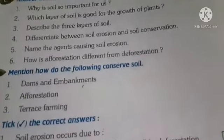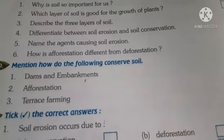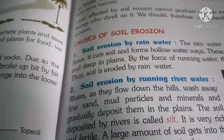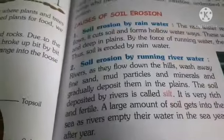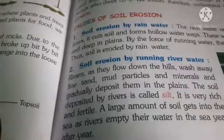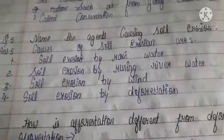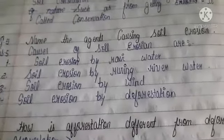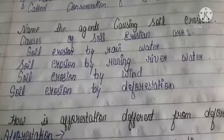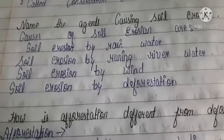The agents causing soil erosion — these are the causes of soil erosion: soil erosion by rainwater, soil erosion by river water or running water, soil erosion by wind, and soil erosion by deforestation. This is the question answer for naming the agents causing soil erosion.